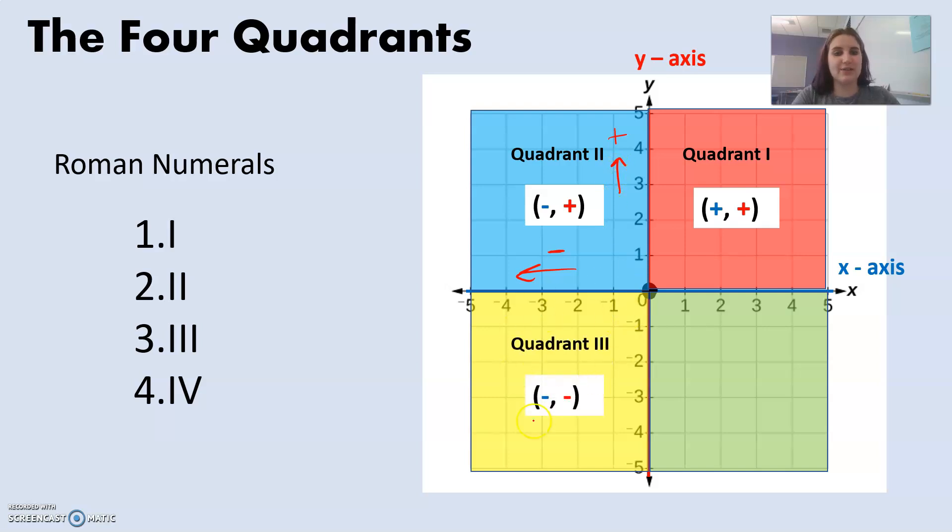Quadrant three is down here, and both x and y are negative. So my x values going this way are negative, and my x values going down are negative. And it's three marks, three i's.